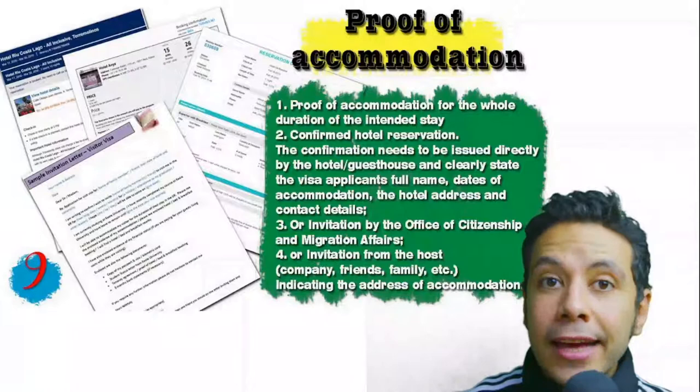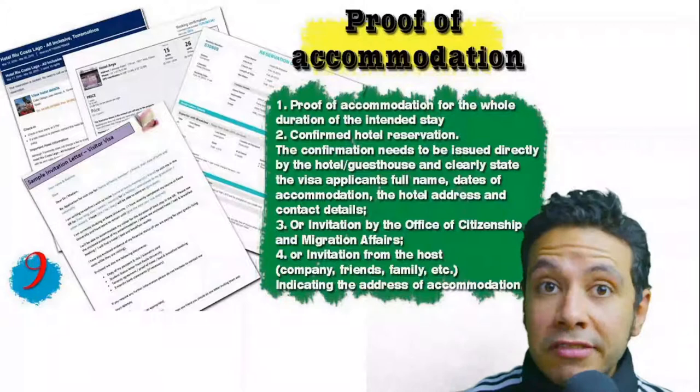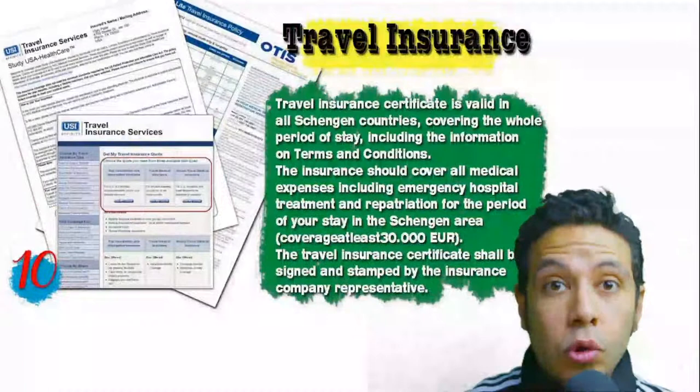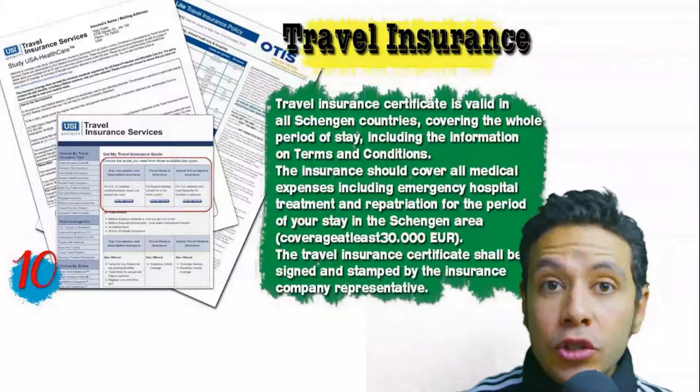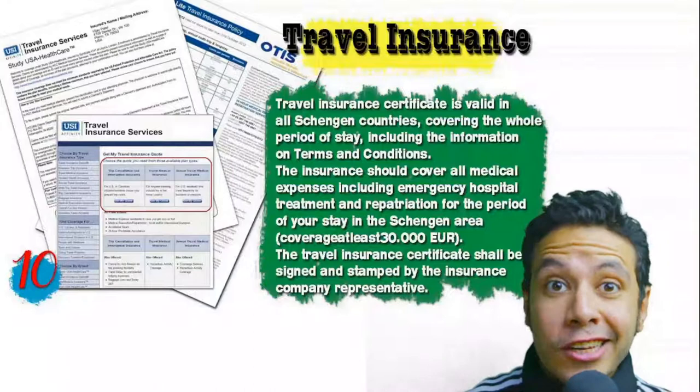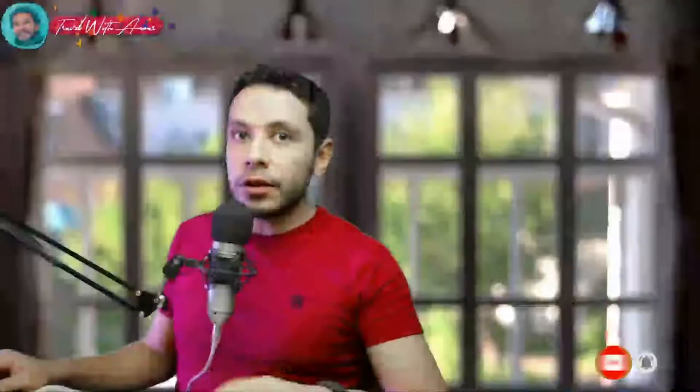The hotel name, address, and contact number must be mentioned. If you are invited by a person, the letter of invitation should either be mailed directly to the embassy or submitted by you along with a copy of the inviting person's passport. Many countries, especially in the Schengen area, also require travel insurance from officially accepted companies, with coverage of at least 30,000 euros.